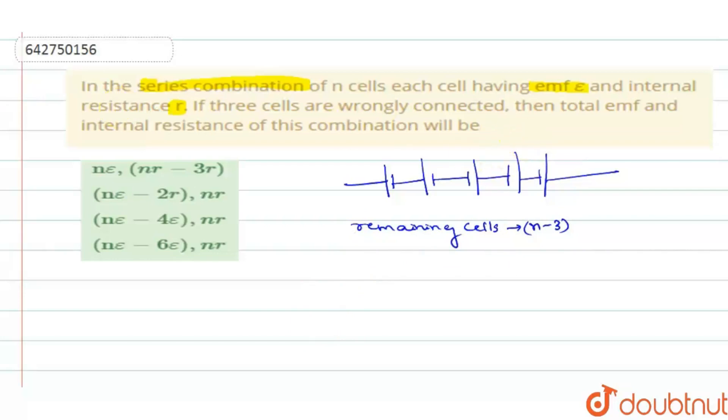So the net EMF when you are writing it, the total EMF will be equal to E net or net EMF will be equal to what is the first remaining number of cells. It is N minus three into E minus the remaining cells, which is connected with opposite polarity. Basically it is three E, right? So net polarity, net EMF will be equal to minus three minus three, you become net N minus six into E. So this becomes the net EMF.